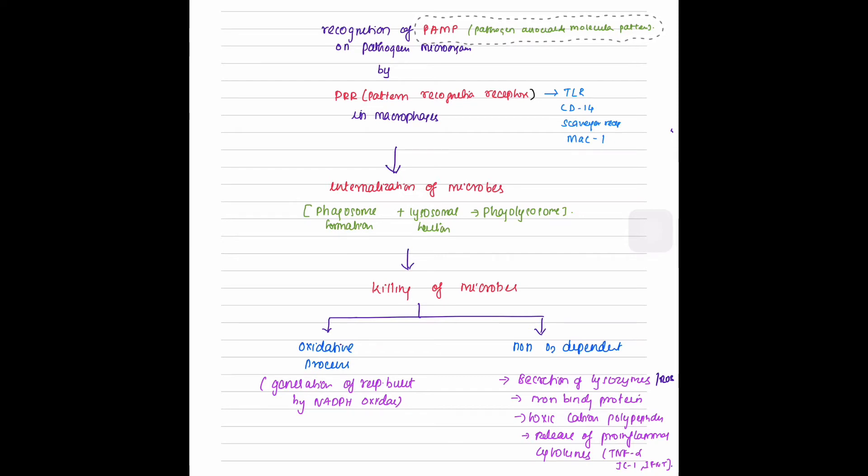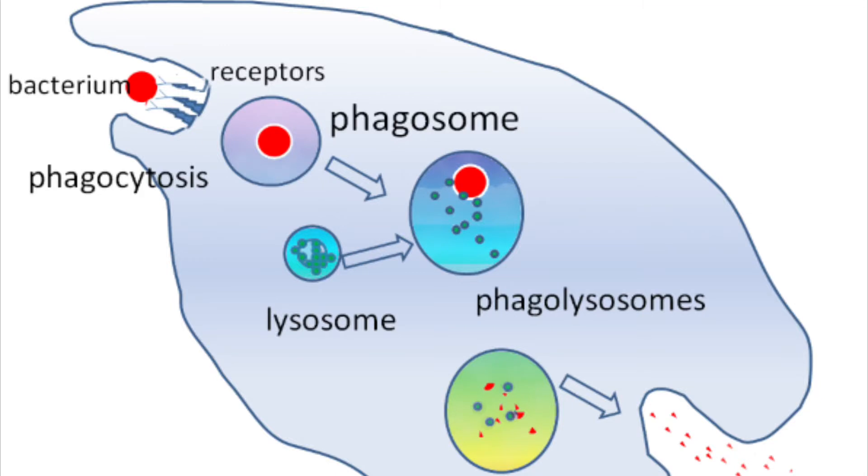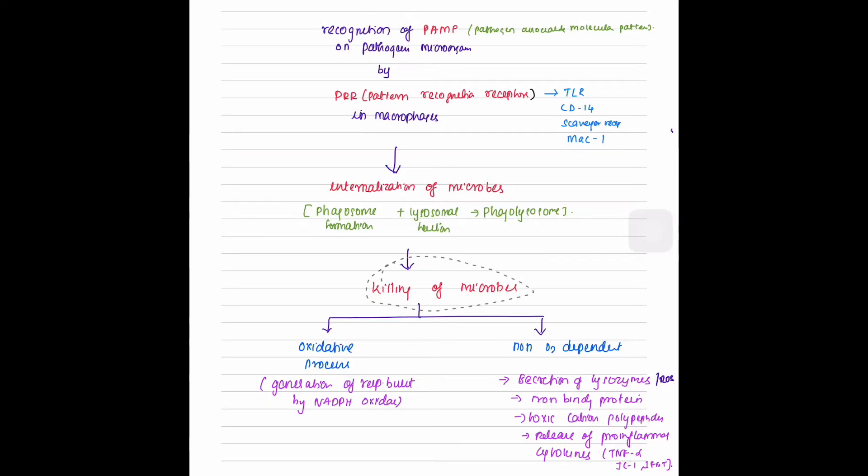After internalization of microbes or phagocytosis, the phagosomes are fused with the lysosomes to form phagolysosomes and production of digestive enzymes that kill the pathogen. The killing of microbes can either be oxygen-dependent or non-oxygen dependent. The oxidative process includes generation of respiratory burst by NADPH oxidase.